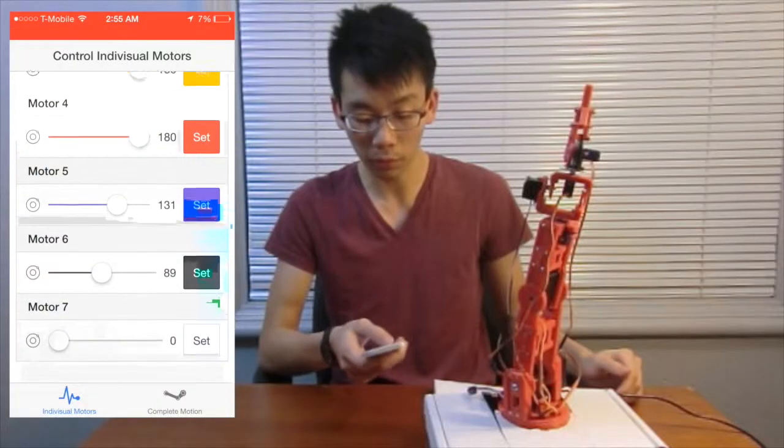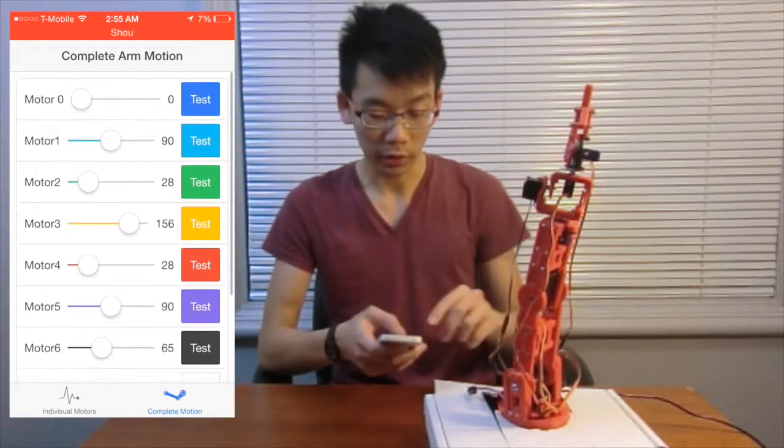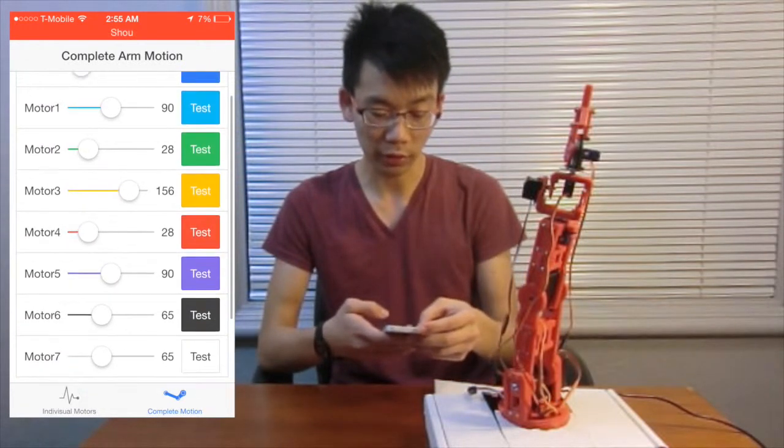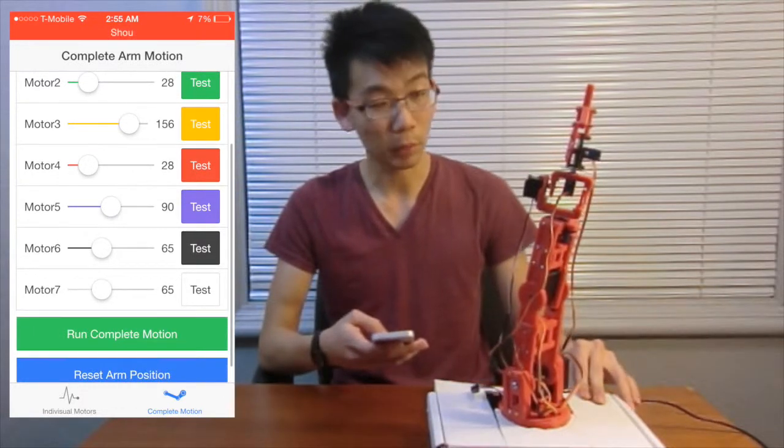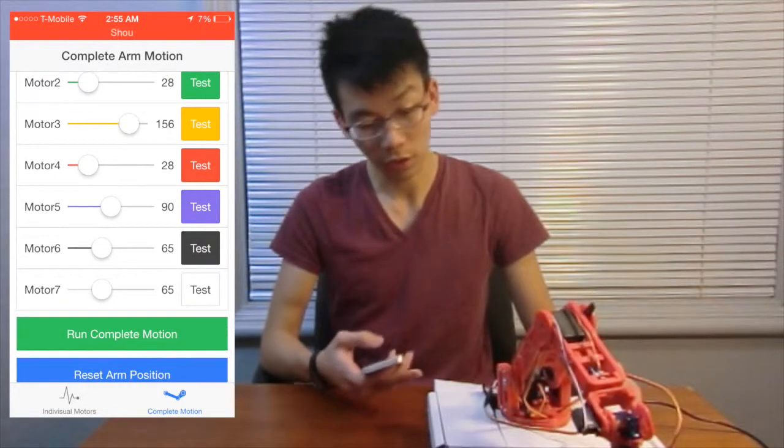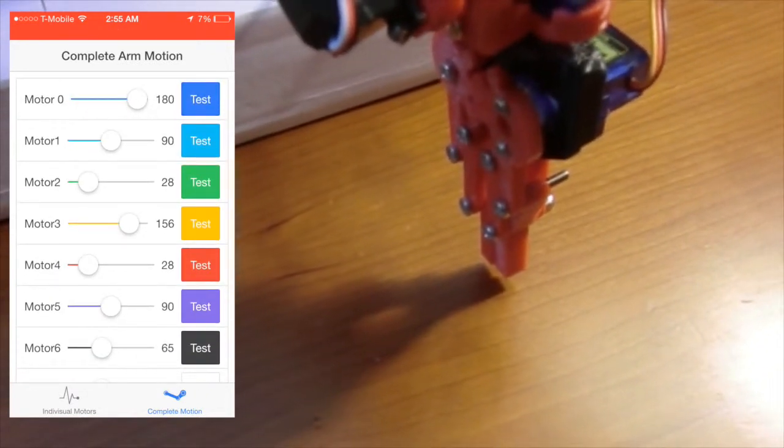And if I set all the motors to the degree I want, I could go to complete motion. And as you can see, motor zero to seven has set up already. I can run the complete motion, and the robotics arm will move to the place I want. And I could open the hand to 180 degrees.